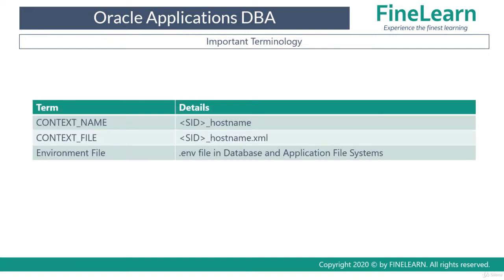The first important term is context name. The context name is nothing but SID underscore hostname. For example, if the SID of the database is 'prod' and the hostname of your eBusiness Suite node is 'apps', then the context name will be 'prod_apps'. This is very important because several files and directories in the Oracle eBusiness Suite file system use the same naming convention.